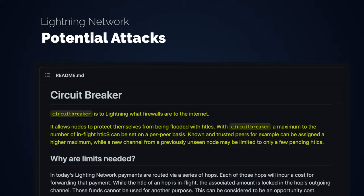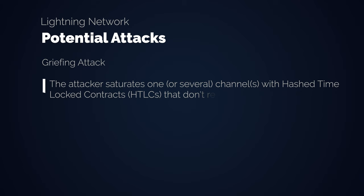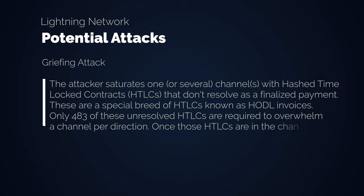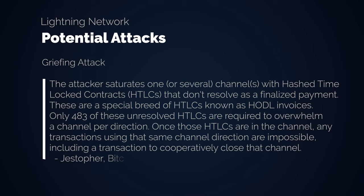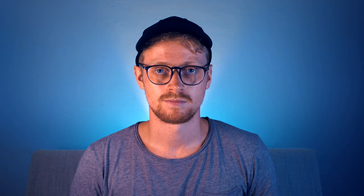Griefing attacks have a similar pattern. They don't involve stealing funds, but simply spamming channels with HTLCs, which freezes the funds of the victim and may force them to close the channel which involves a fee. The attacker saturates channels with hash time-lock contracts that don't resolve as finalized payments — known as HODL invoices. Only 483 of these unresolved HTLCs are required to overwhelm a channel per direction. Demanding a ransom or disrupting a route to lead others over the attacker's route could be motives. Limiting the amount of HTLCs on a per-peer basis seems to be the solution, however the intrinsic privacy of the network makes this harder since you can't tell if a peer is the attacker or just routing the attack from someone else.